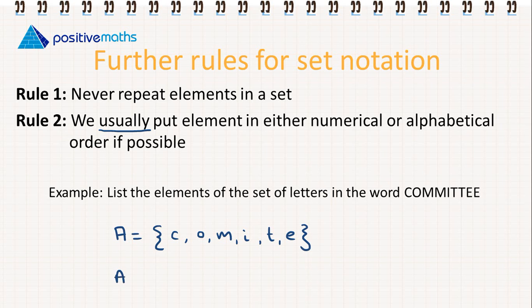So if we're going to rewrite that and just list them in alphabetical order, we have A is equal to {C, E, I, M, O, T}.